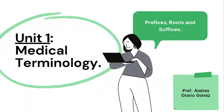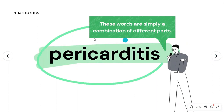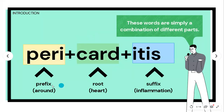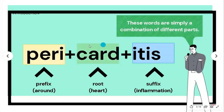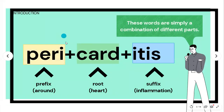Good afternoon. This video covers the first unit: medical terminology, specifically prefixes, roots, and suffixes. As you can see with the word 'pericarditis,' most medical words are simply a combination of elements called prefixes, roots, and suffixes. Today we are going to look at these three elements in depth.